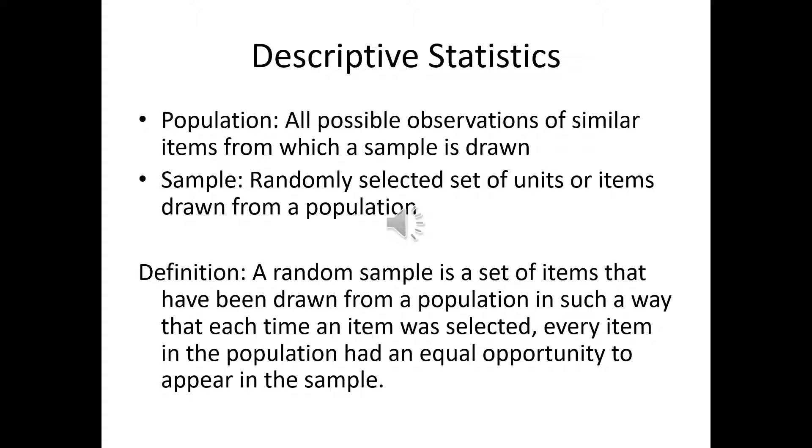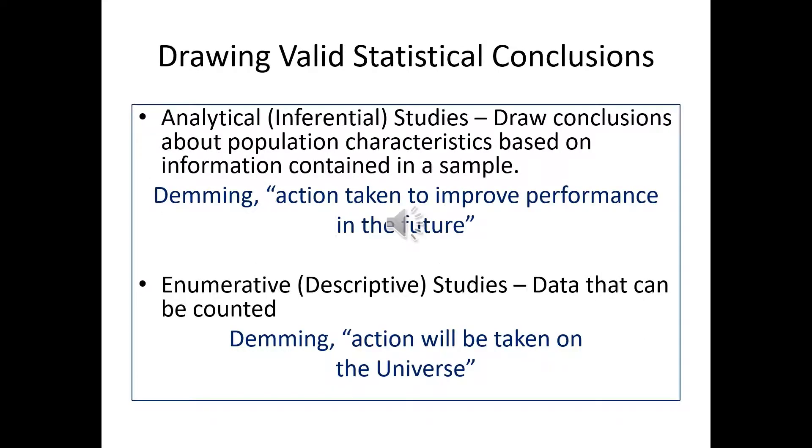Descriptive statistics are good, but what we want to do is inferential studies. In other words, we draw a conclusion about a population based on what we find in the sample. Deming, who's like the guru of quality, said an action taken to improve performance of the future—enumerative studies. Inferential studies are going to tell us something about the future. We can predict what's going to happen in our process, product, or whatever we're looking at. Descriptive statistics tell you it's a snapshot, the way it is now.